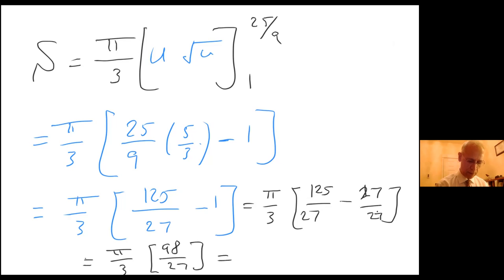So I get 98π over 3 times 27, which is 81.